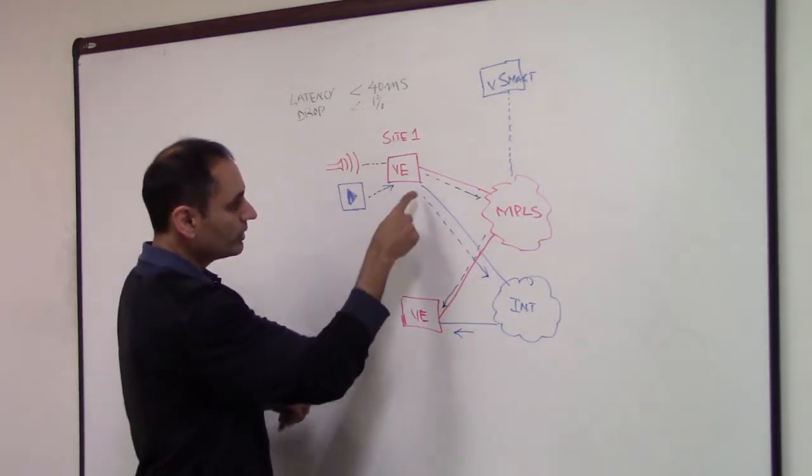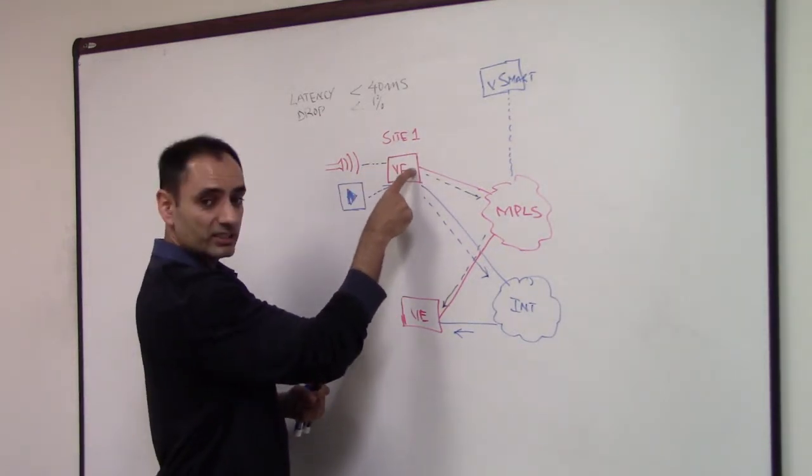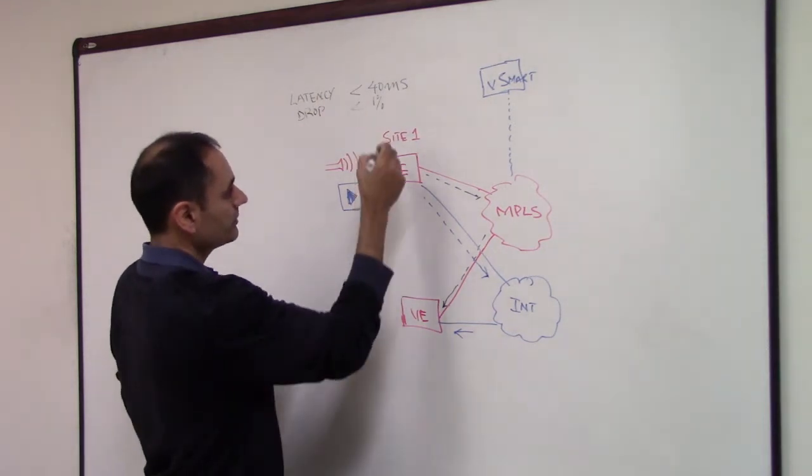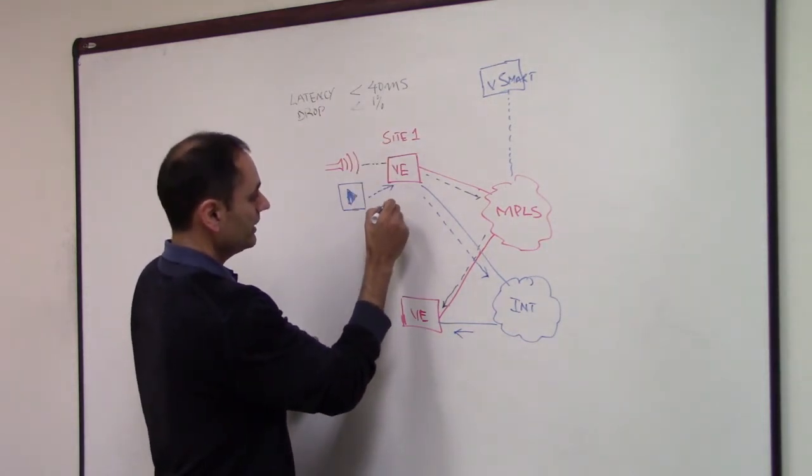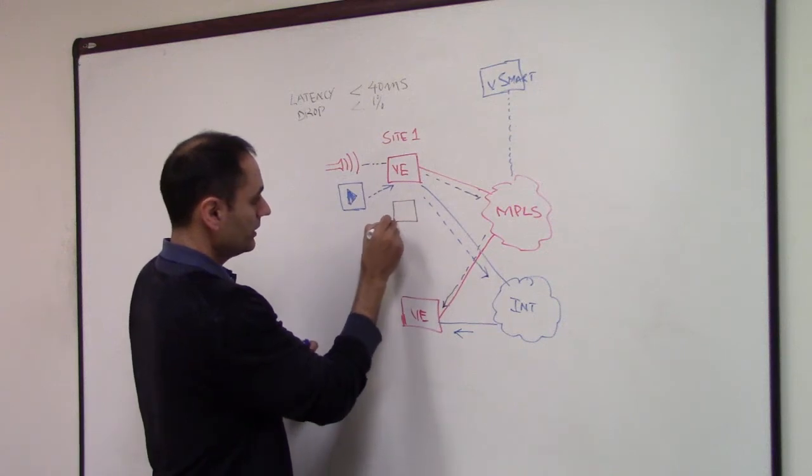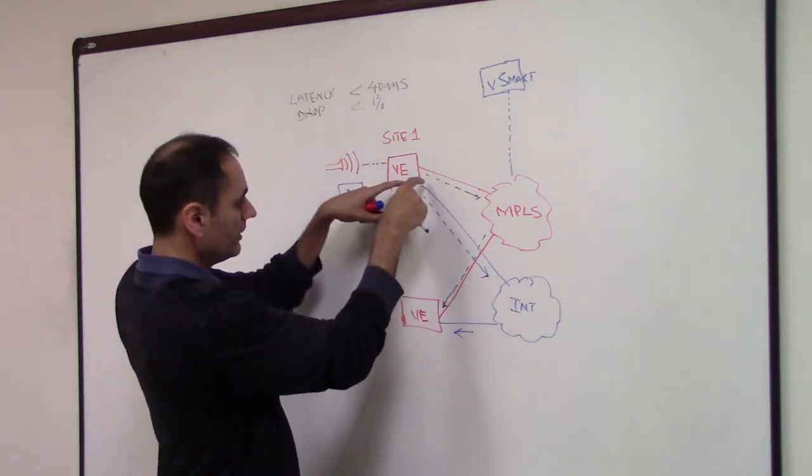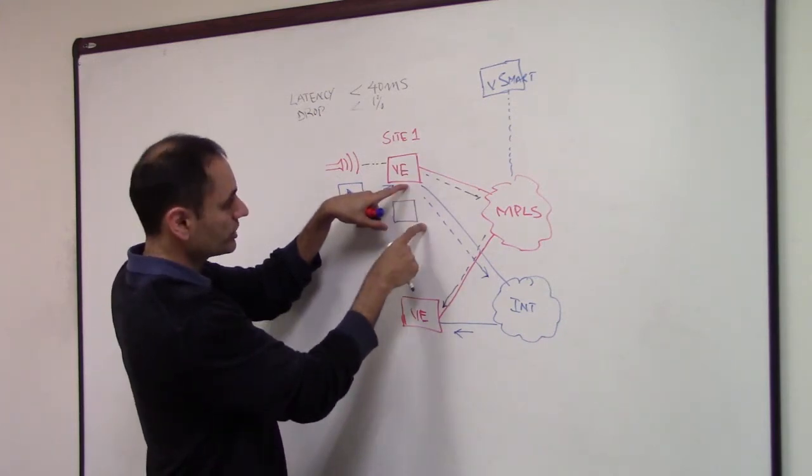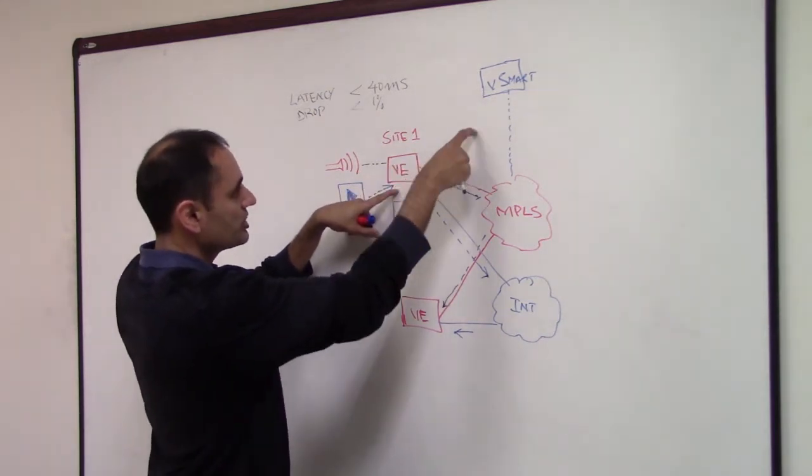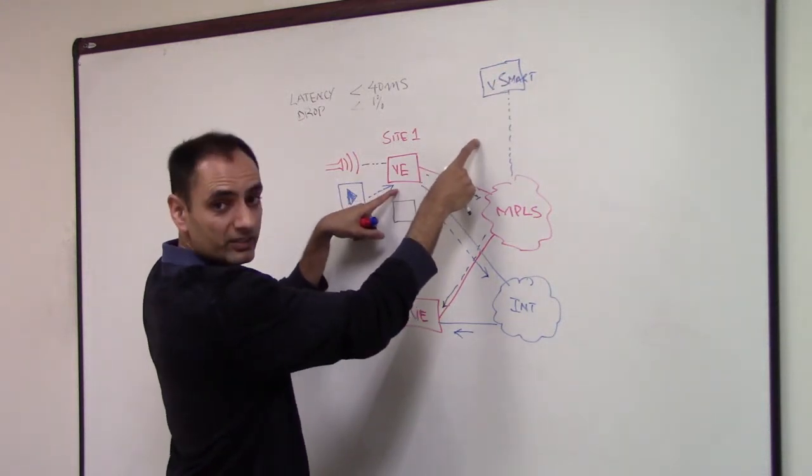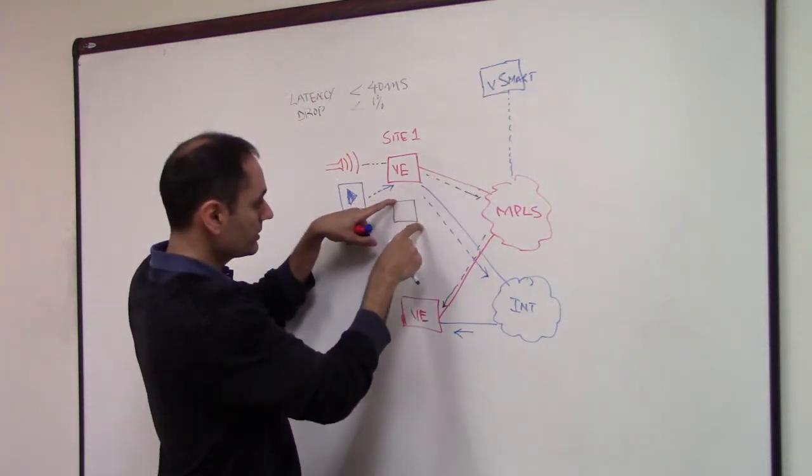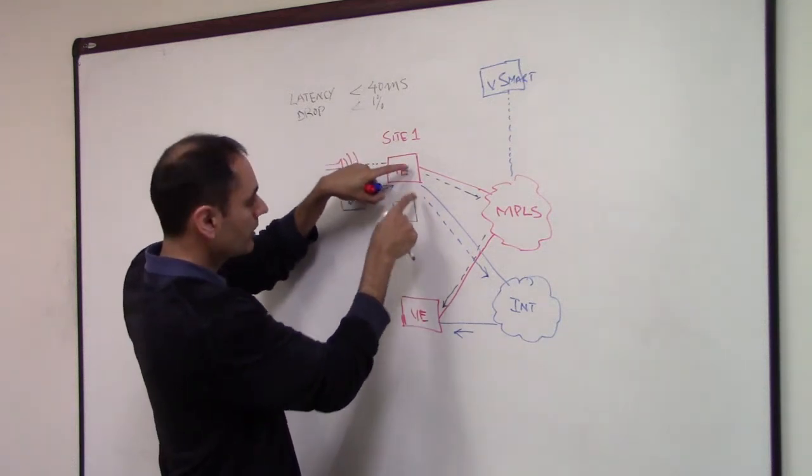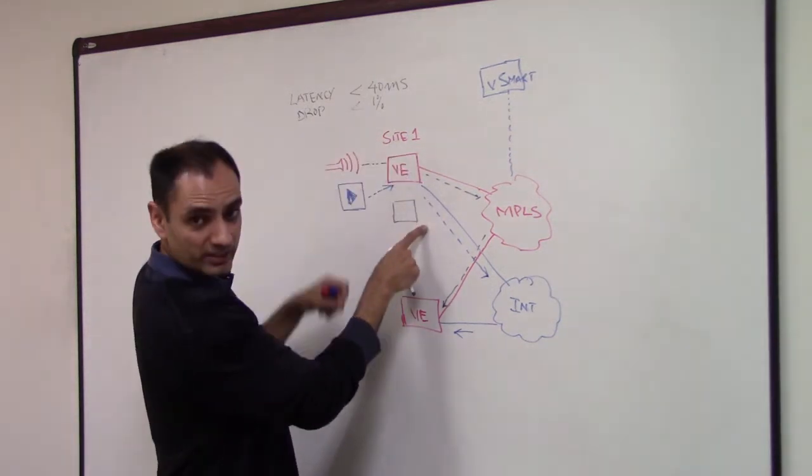And now in this scenario, both transports are terminating on a single V-Edge. These transport connections can be terminating on different V-Edges in the same site as well. So irrespective of where the transport terminates, whether both transports are on the same V-Edge or there is one V-Edge per transport.